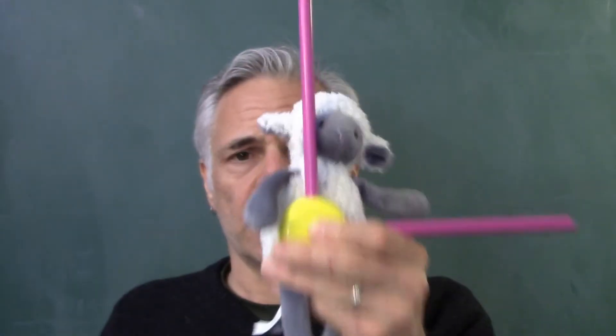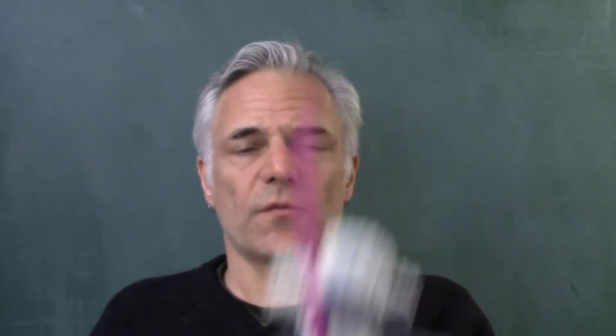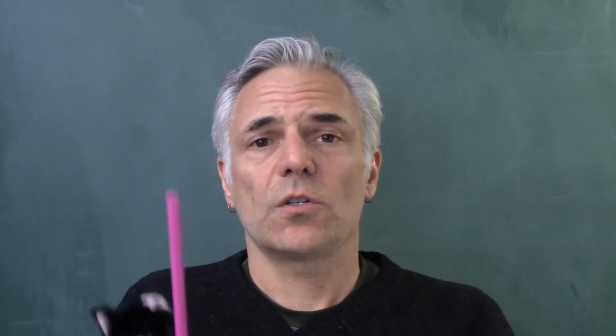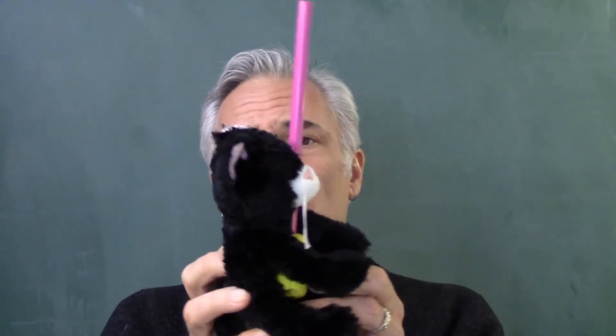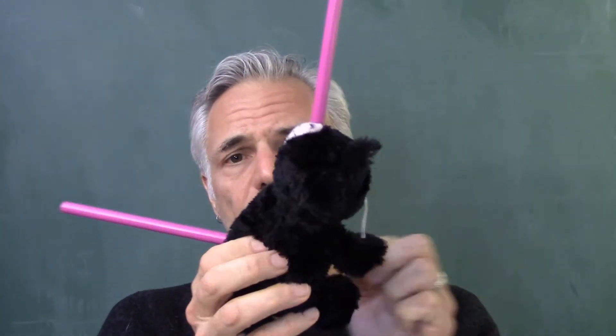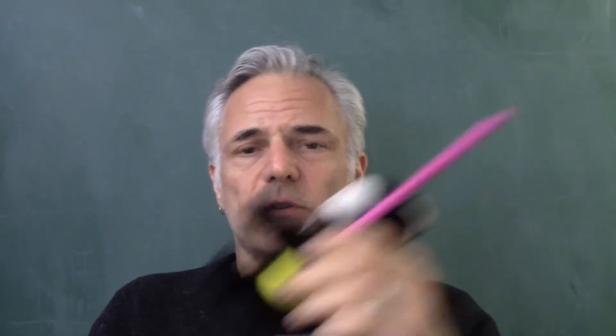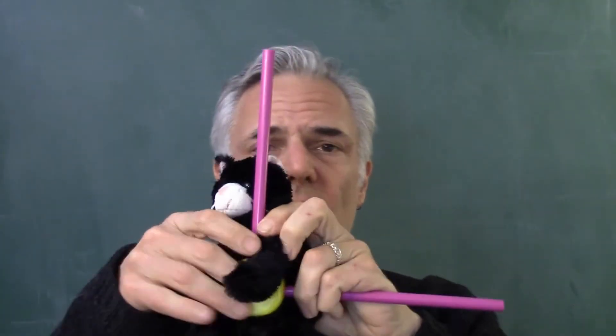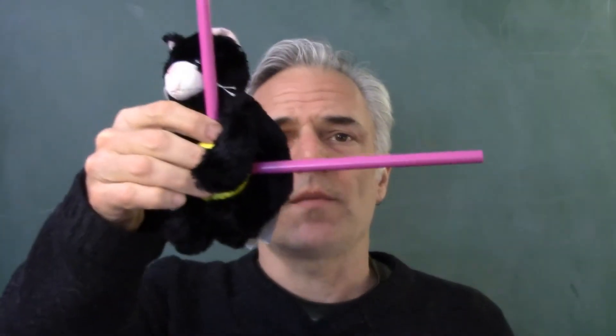So far we've talked about stationary reference frames and reference frames that move at a constant speed. But in theory at least, a reference frame could be attached to all sorts of things. It could be a rotating reference frame, a reference frame that accelerates, or a reference frame that's in free fall. All of those would still be reference frames.